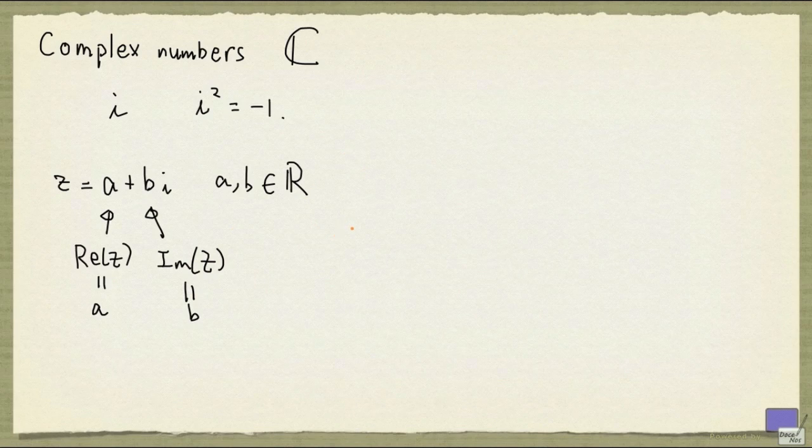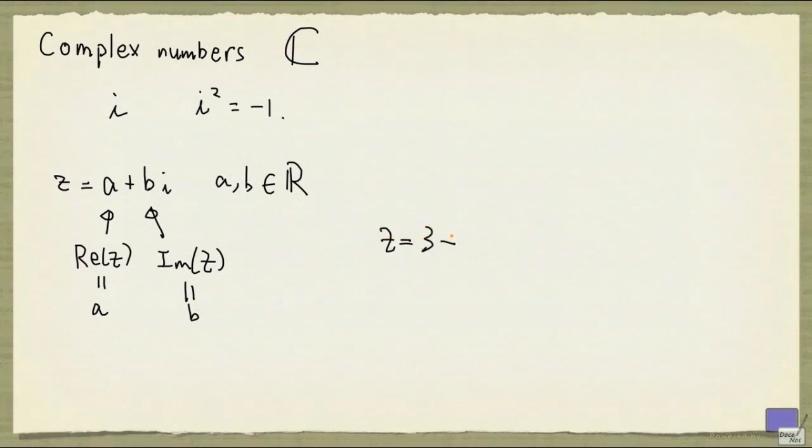So for example, if z is 3 plus 2i, then the real part of z is going to be 3, and the imaginary part of z is going to be 2.